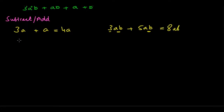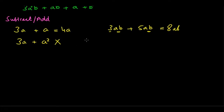This doesn't work when your variables have different powers or are different variables. If I have 3a and try to add a squared to it, I can't combine them — they have different powers. Similarly, if I had 3a and tried to add ab to it, those two things cannot be added either.